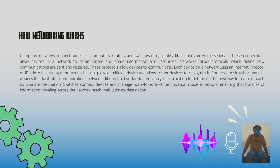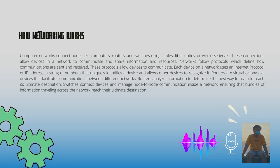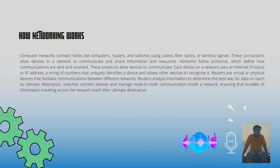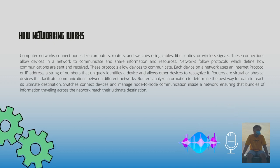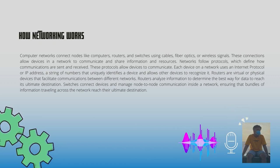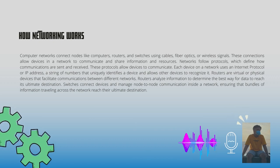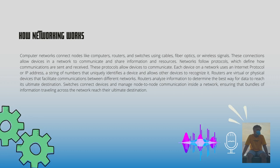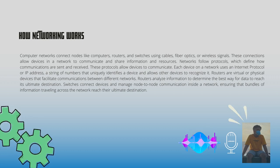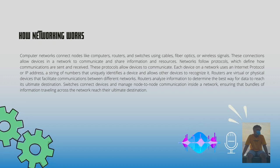These connections allow devices in a network to communicate and share information and resources. Networks follow protocols, which define how communications are sent and received. These protocols allow devices to communicate. Each device on a network uses an Internet Protocol (IP) address — a string of numbers that uniquely identifies a device and allows other devices to recognize it.